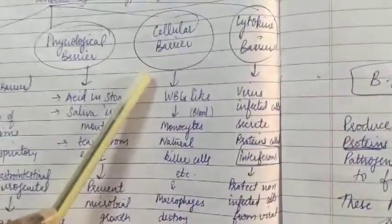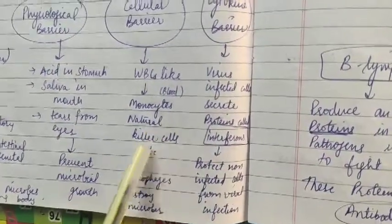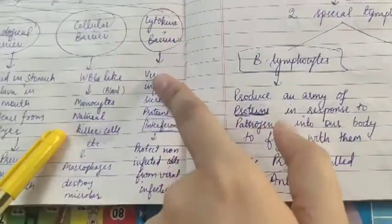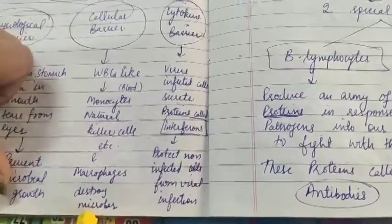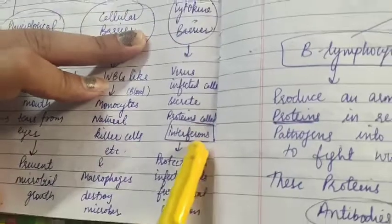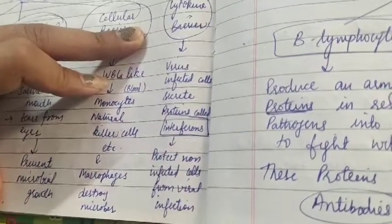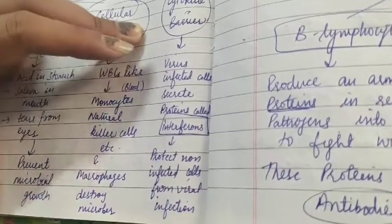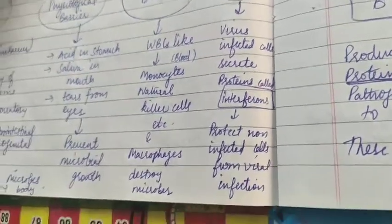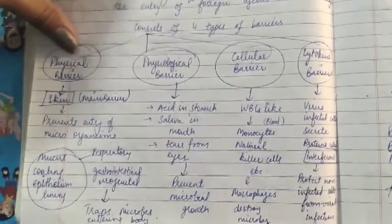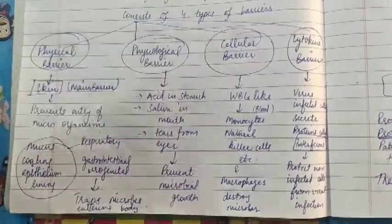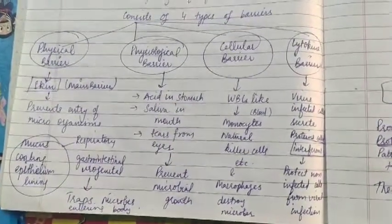The third barrier is the cellular barrier. Our white blood cells — such as monocytes, natural killer cells, and macrophages — are present in blood and destroy all microbes. The last barrier is the cytokine barrier: virus-infected cells secrete proteins called interferons, which protect non-infected cells from viral infection. All of these — skin, stomach acid, white blood cells, and interferons — act as barriers and stop microorganisms from entering our body.